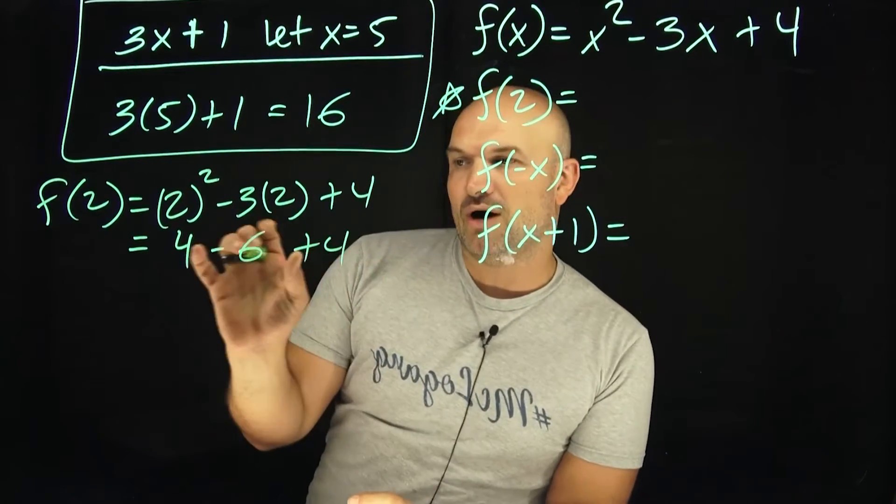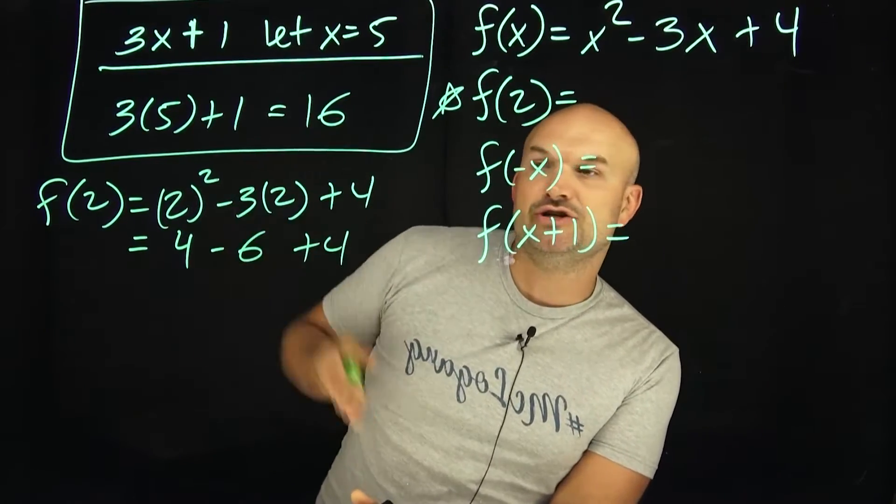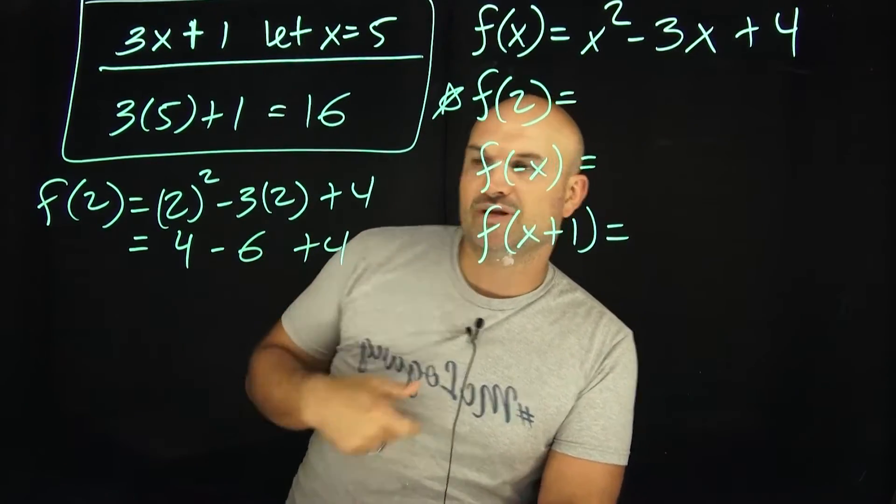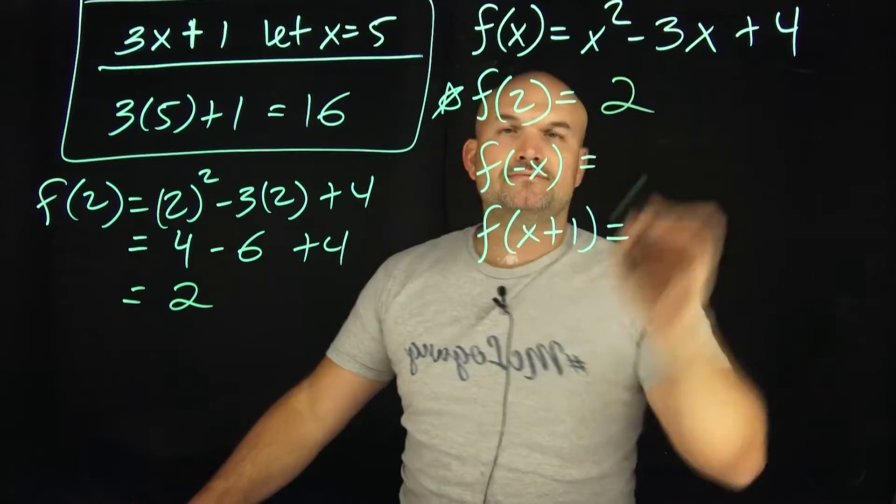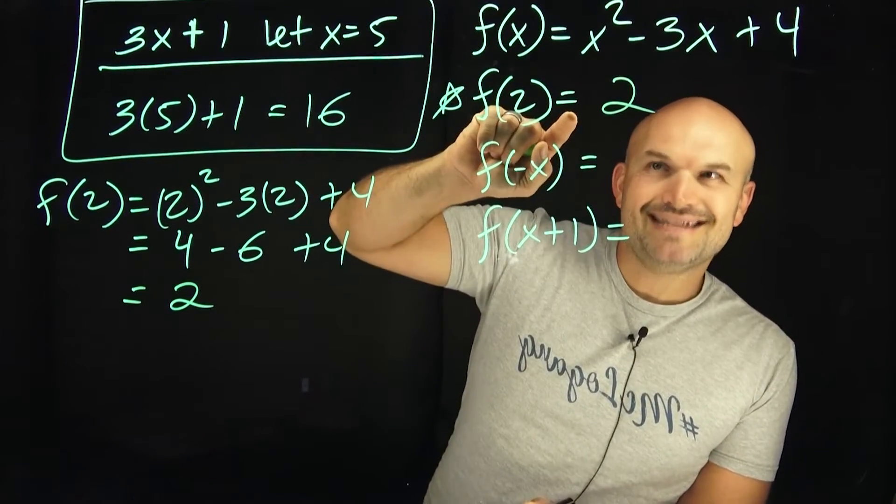And remember, whenever you are simplifying an expression with addition and subtraction, or double subtraction or double addition, just make sure you go from left to right. So 4 minus 6 is going to be negative 2. Negative 2 plus 4 is going to equal a positive 2. So again, what this reads is the value of my function f at 2 is equal to 2.